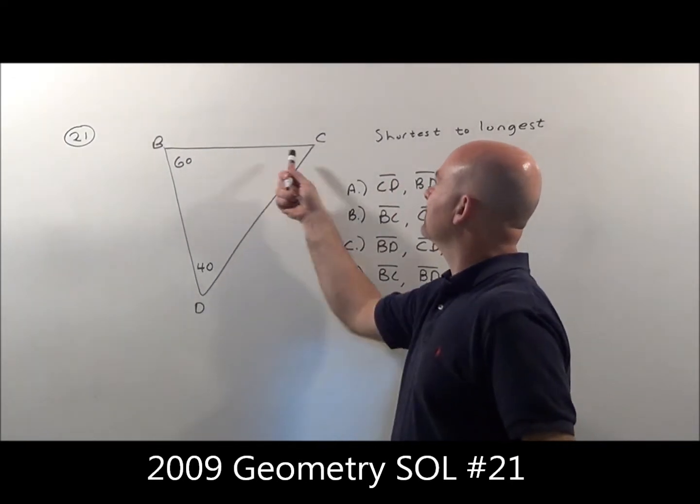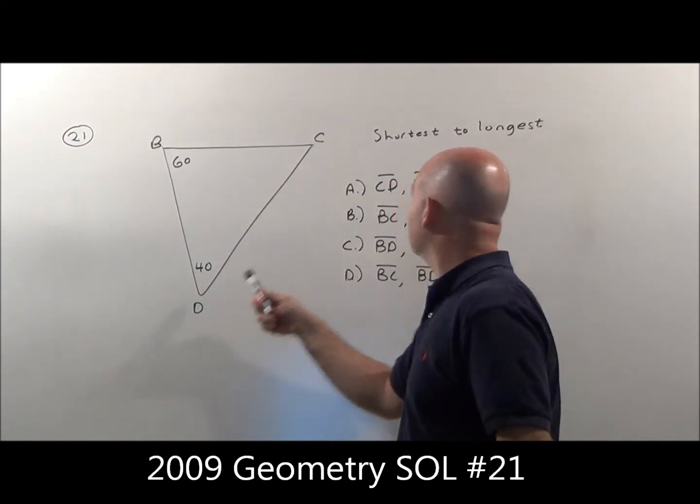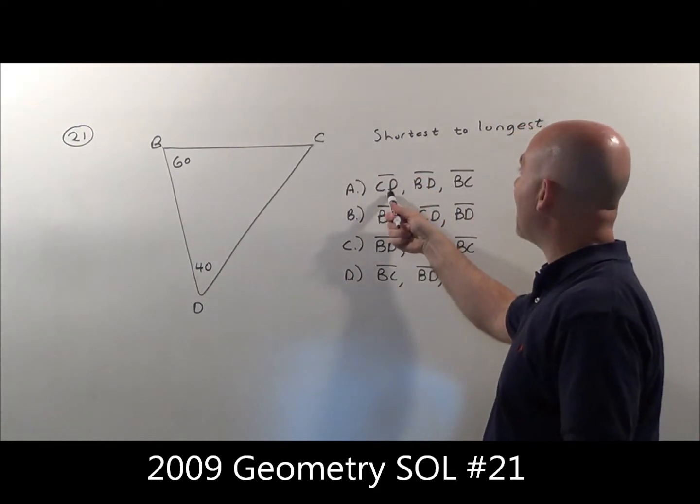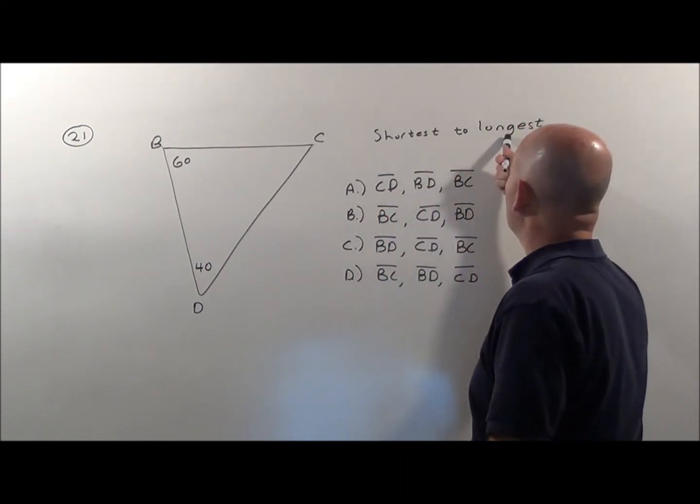Problem 21. It gives us a triangle here, triangle BCD, and it wants us to put the side lengths in order from shortest to longest.